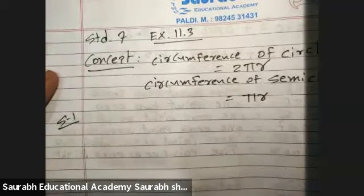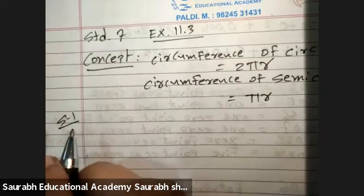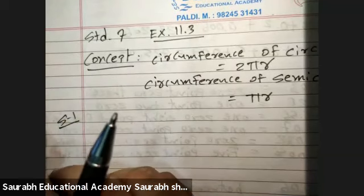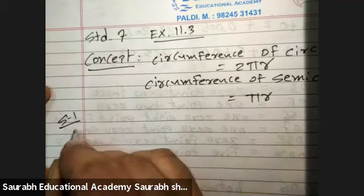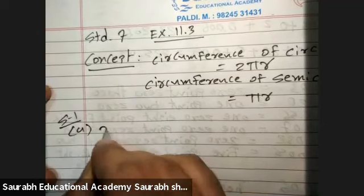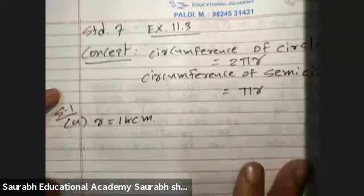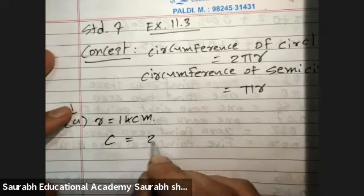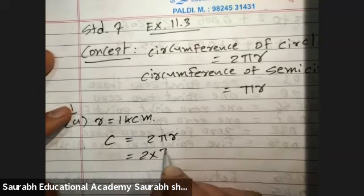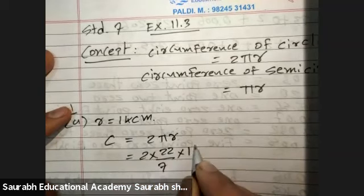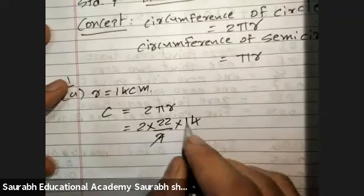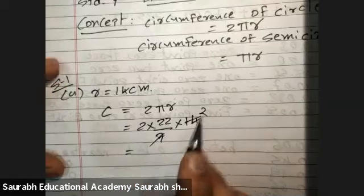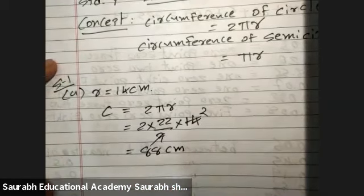Sum number 1: Find the circumference of a circle with the following radius. Part A: Radius = 14 cm. Circumference C = 2πr = 2 × (22/7) × 14. 7 cancels, giving 22 × 4 = 88 cm.